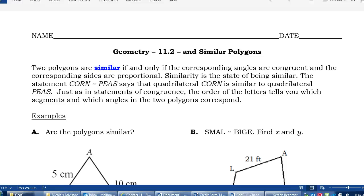This is Geometry Lesson 11.2, Similar Polygons. Two polygons are similar if and only if the corresponding angles are congruent and the corresponding sides are proportional.